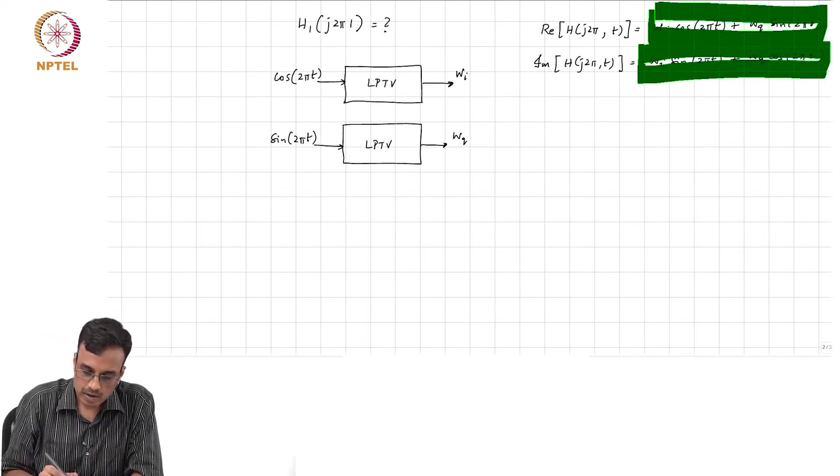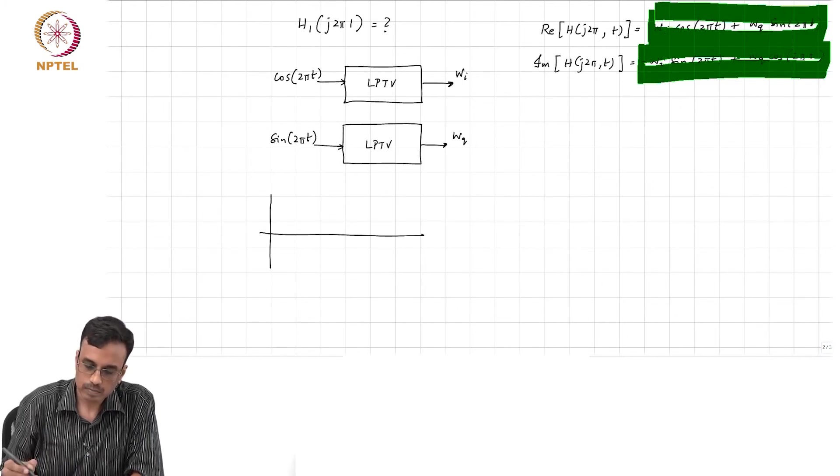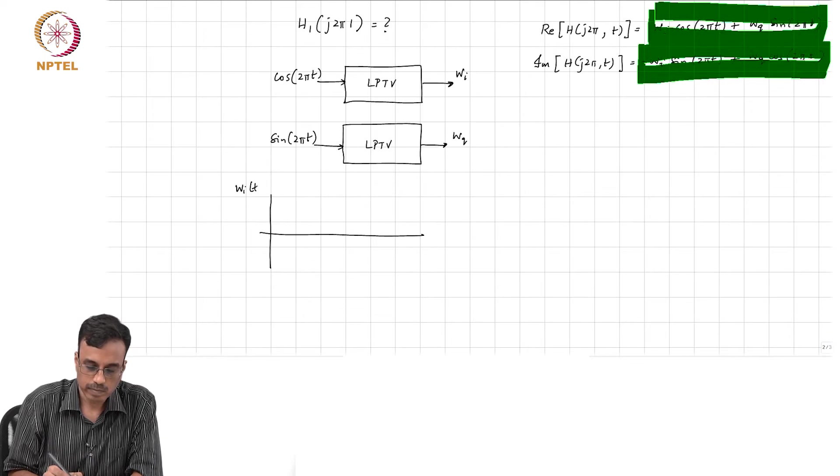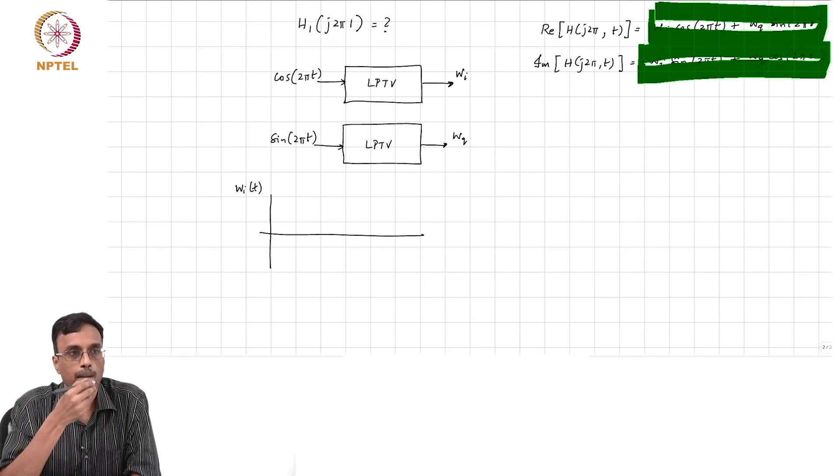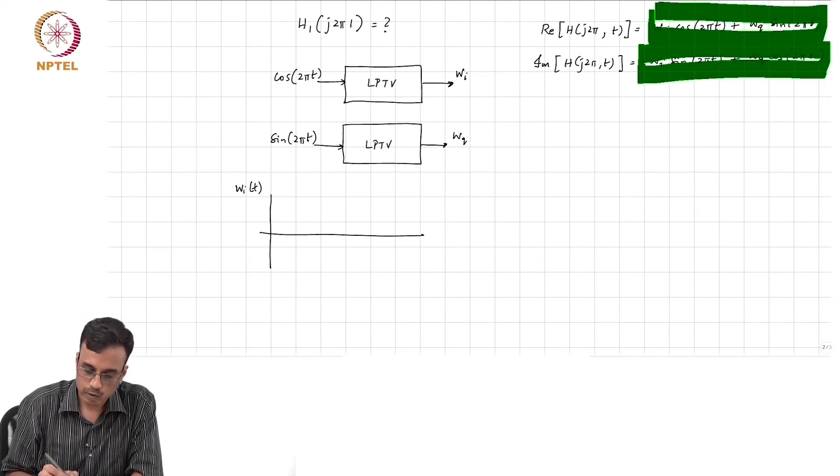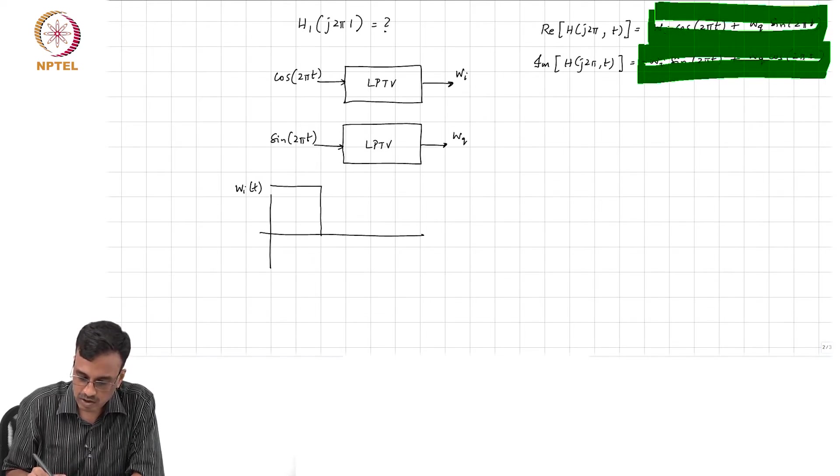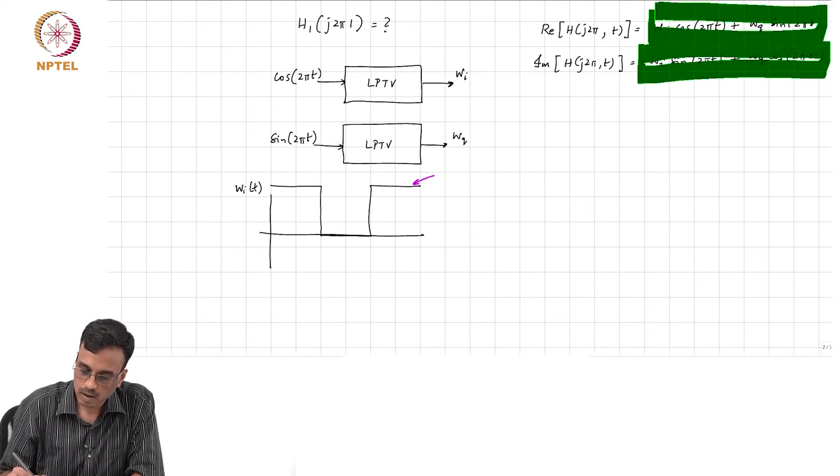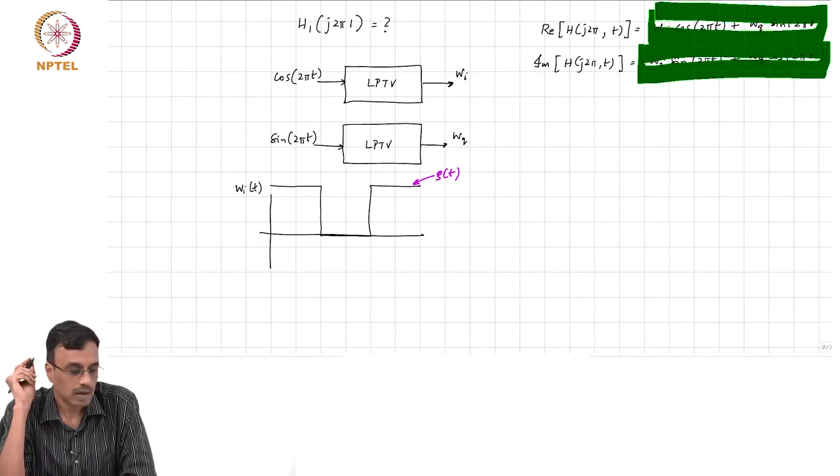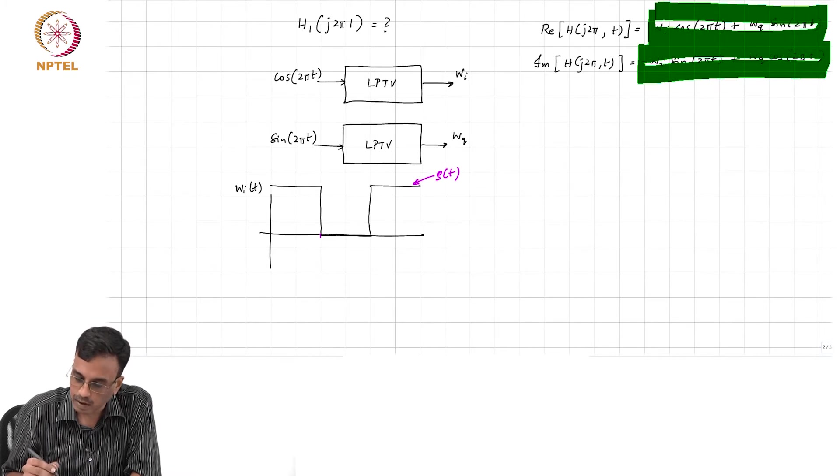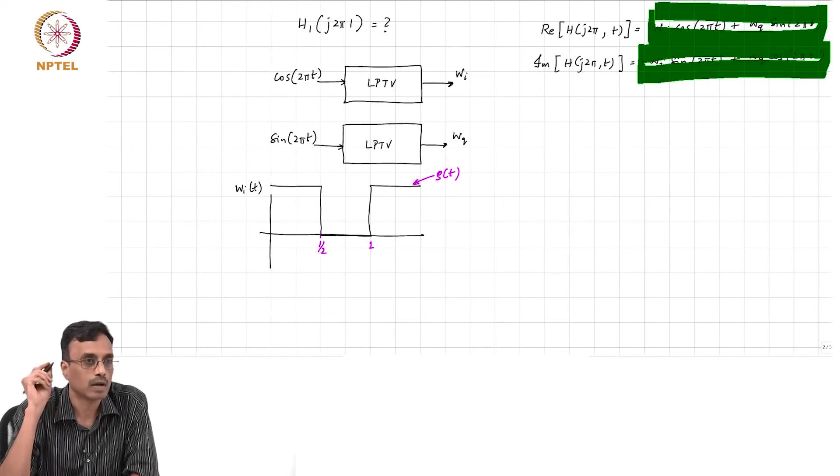So now let us actually do it. So if we put cos 2πfₛt, how will wᵢ look like? Let us assume that you know, the g of t is like this - it is very high at 0, right. And this goes from 0 to - sorry, this is half a second I guess, right? No, sorry, 2π. Yeah, this is half a second. This is one second, yes.